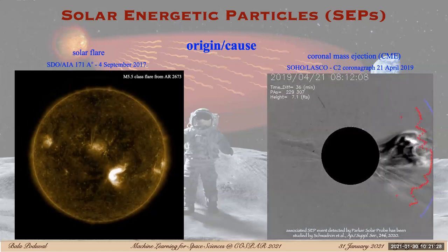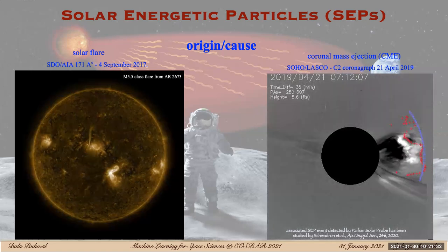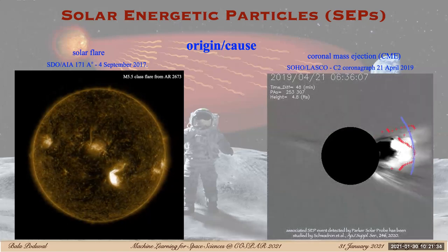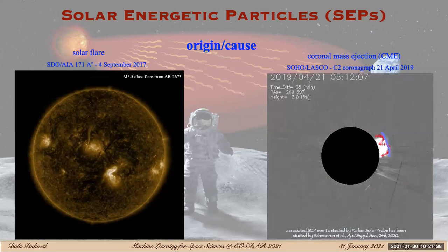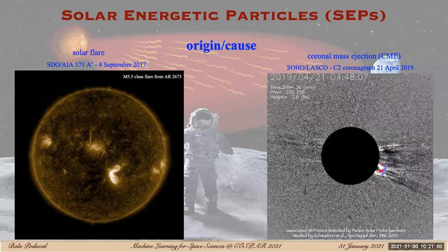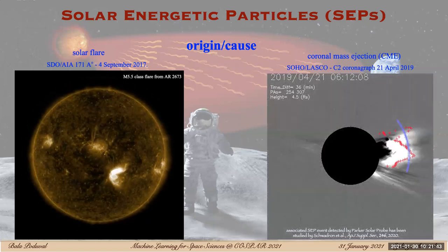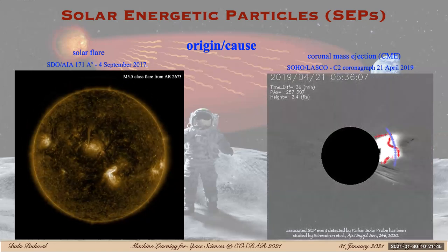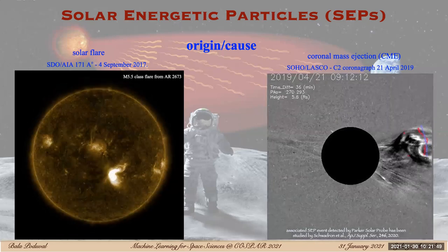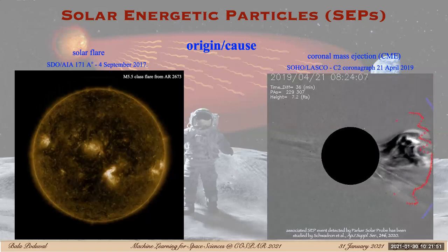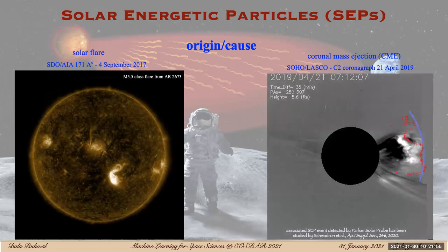Over-plotted are the fitted profile and the shock front moving along. The CME occurred on April 21st, 2019, and the associated SEP events were recorded by Parker Solar Probe, which was at a distance of 0.48 AU from the Sun.